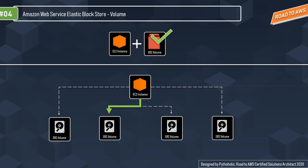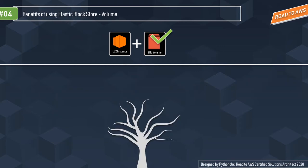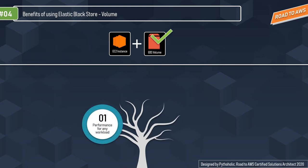Let's look at the benefits of AWS EBS volumes. First: performance for any workload. SSD-backed options include a volume designed for high-performance applications and a general-purpose volume offering strong price-performance for most workloads. Hard disk drive-backed volumes are designed for large sequential workloads such as big data analytics, log processing, and data warehousing — so we have the best of both worlds.